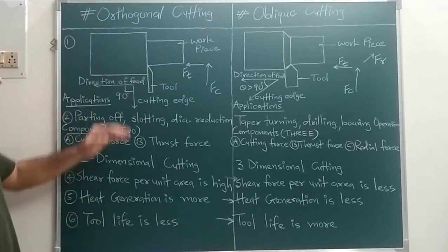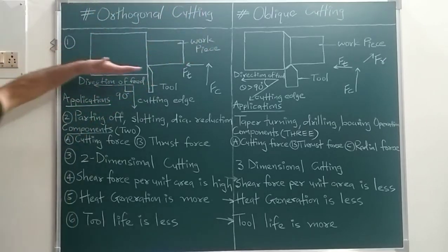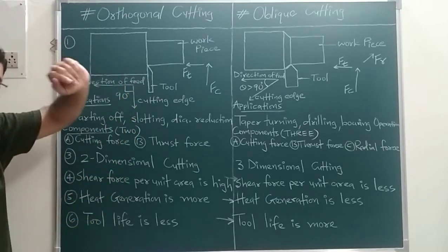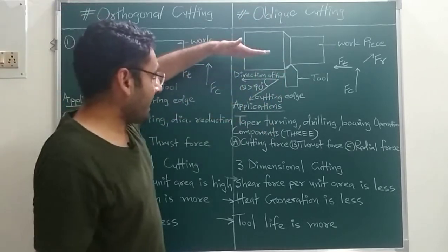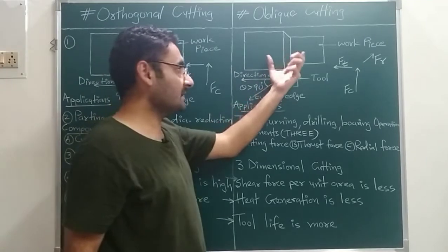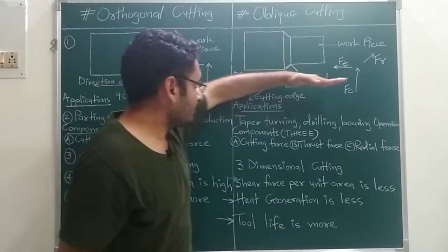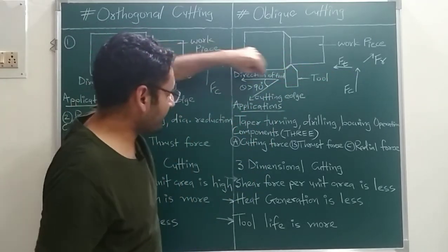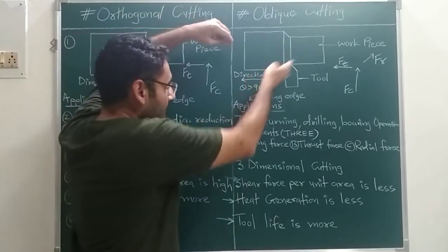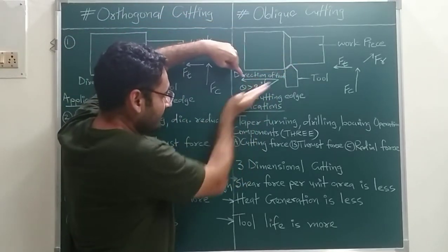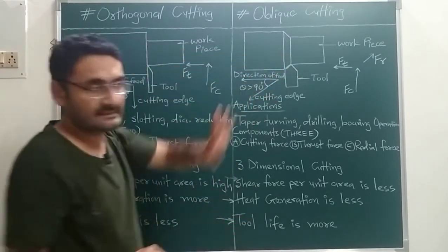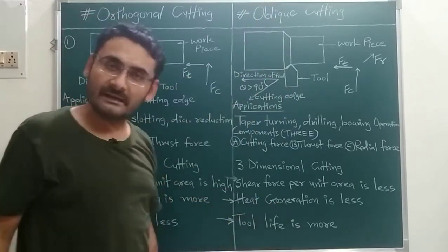In orthogonal cutting, the angle between the direction of feed and the cutting edge of the tool is 90 degrees. Whereas in oblique cutting, the angle between the direction of feed and the cutting edge is less than 90 degrees. As you can see from the figure, the edge of the tool is not perpendicular but has some inclination — so that angle is less than 90 degrees, which is the oblique cutting operation.